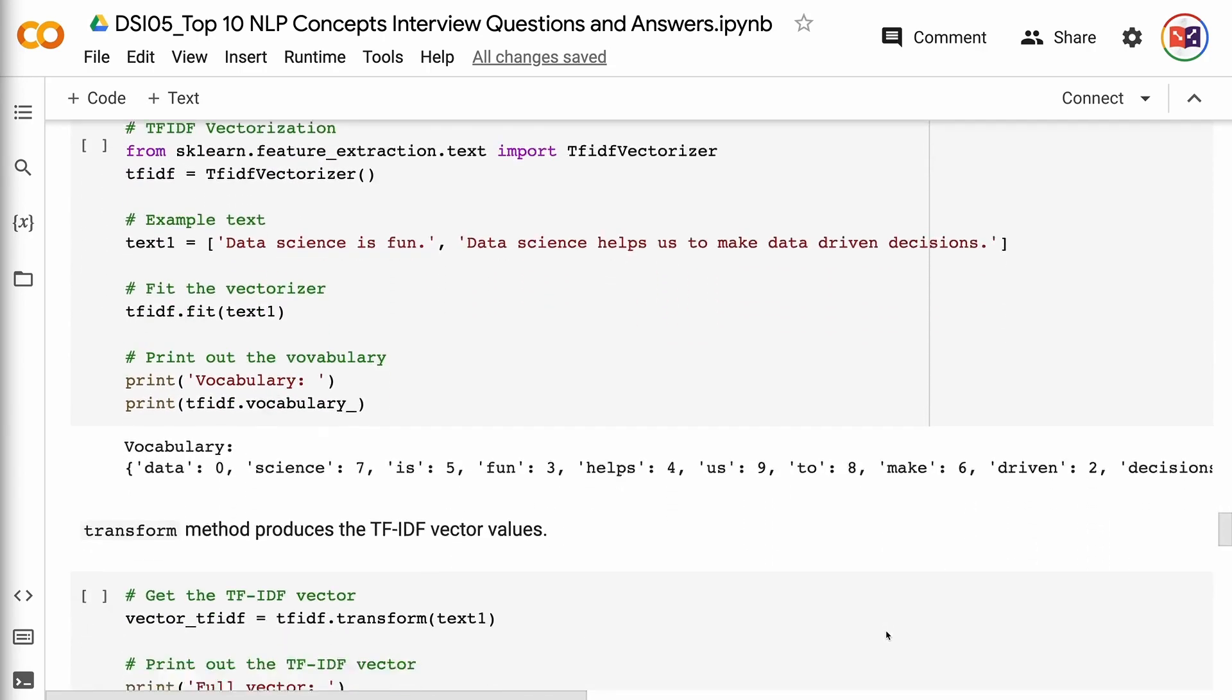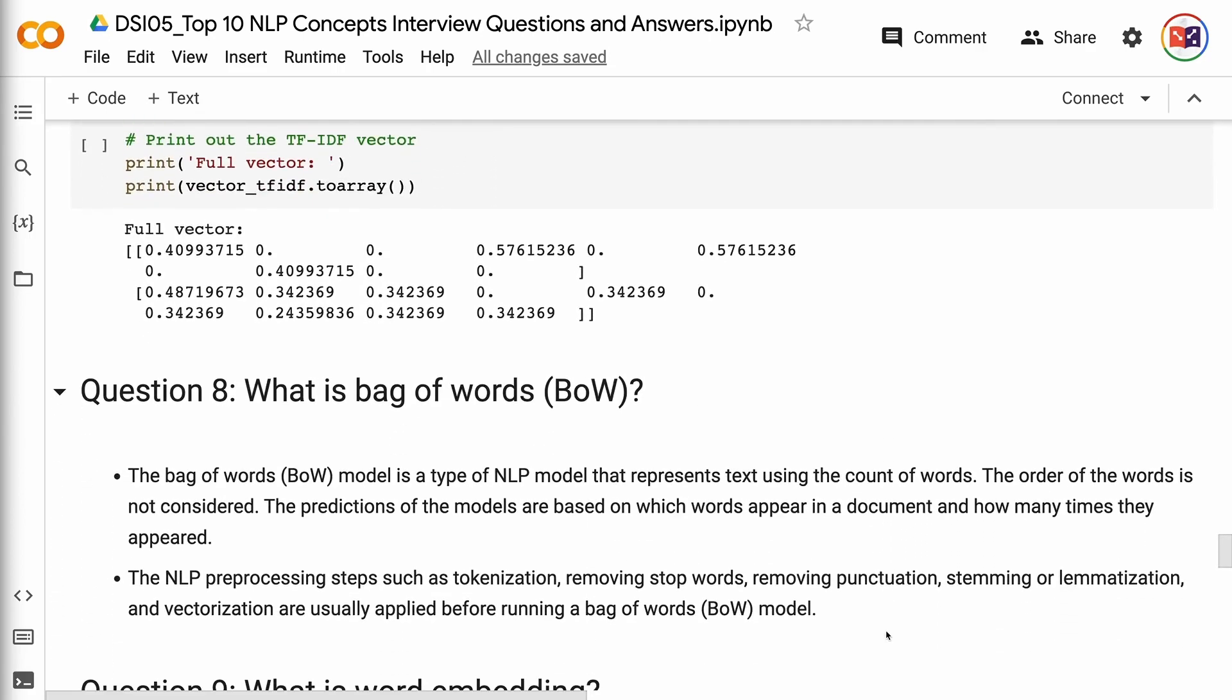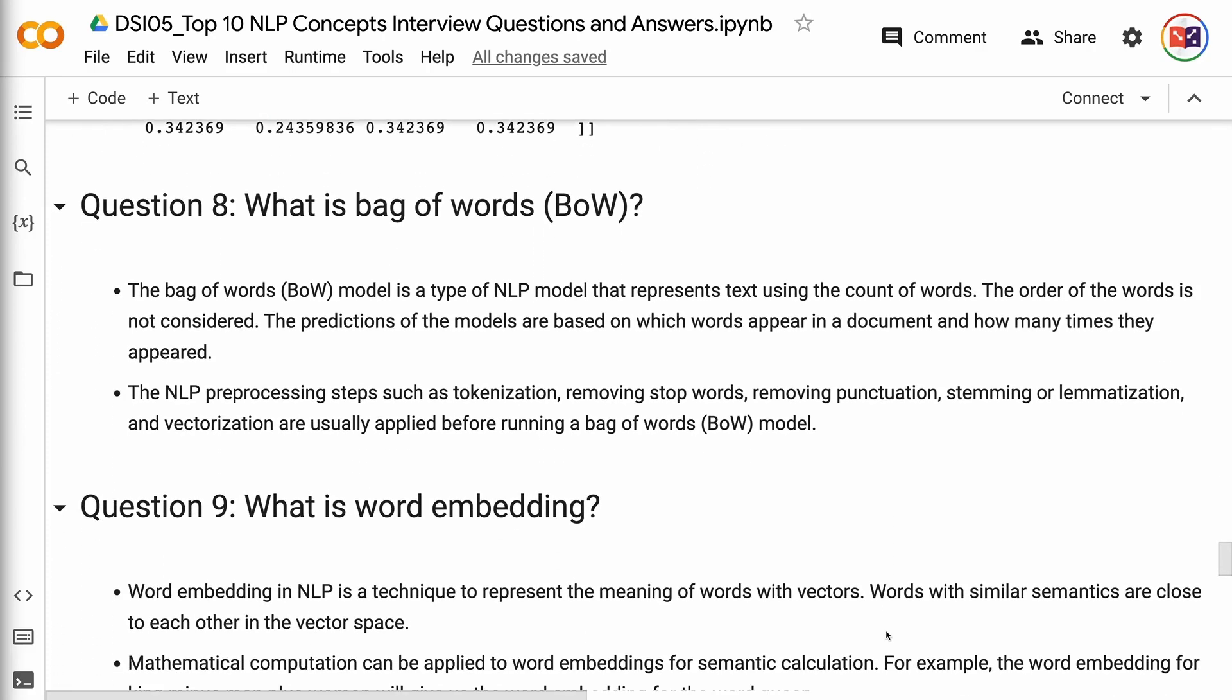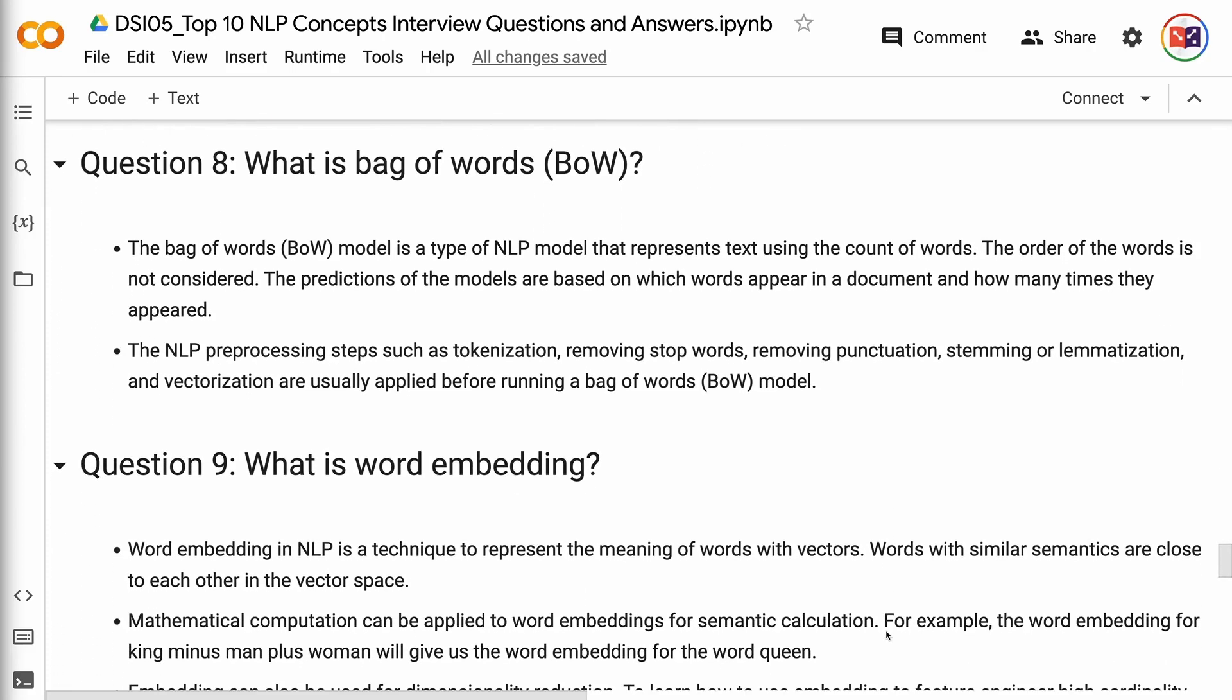Question 8: What is bag of words? The bag of words model is a type of NLP model that represents text using the count of words. The order of the words is not considered. The predictions of the models are based on which words appear in a document and how many times they appeared. The NLP preprocessing steps such as tokenization, removing stop words, removing punctuation, stemming or lemmatization, and vectorization are usually applied before running a bag of words model.